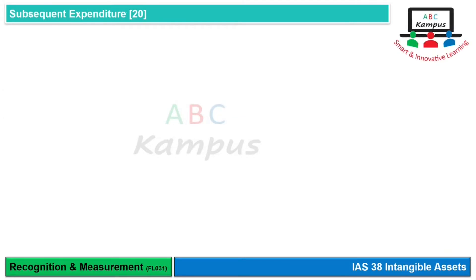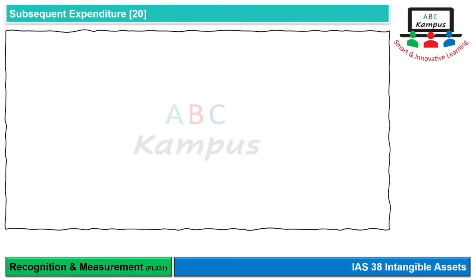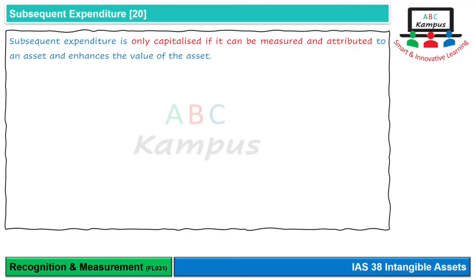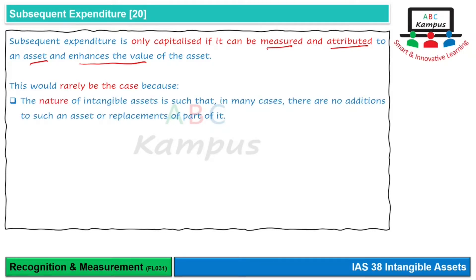Subsequent expenditure on intangible assets is a very technical area. Such expenditure is only capitalized if it meets the definition and recognition criteria of an intangible asset. For example, if you have a brand name, subsequent expenditure is only capitalized if it truly enhances or replaces the brand's capacity to generate future economic benefits.